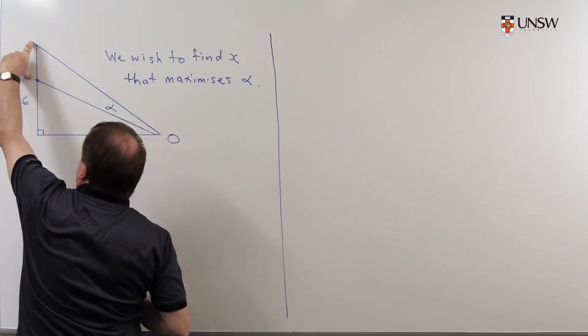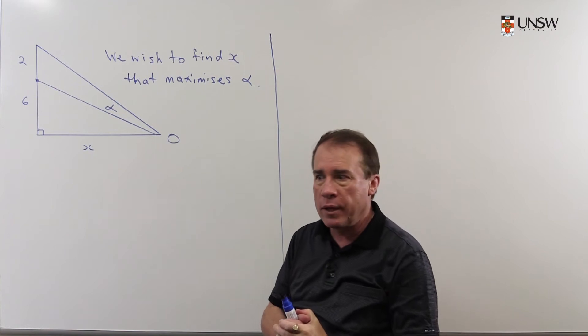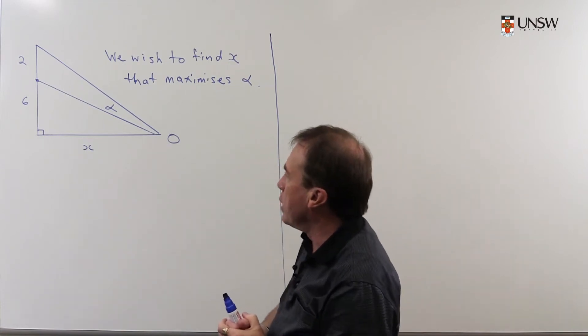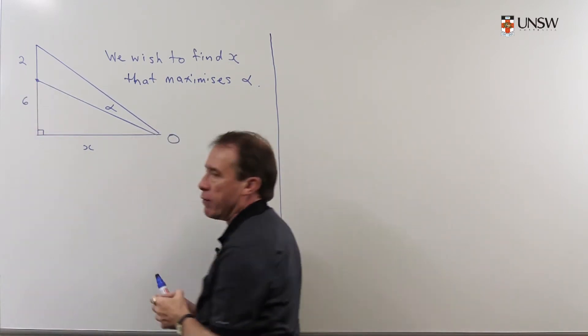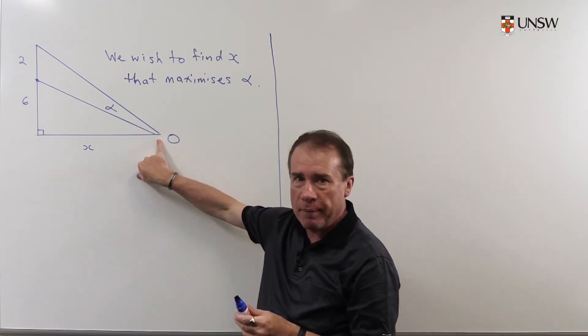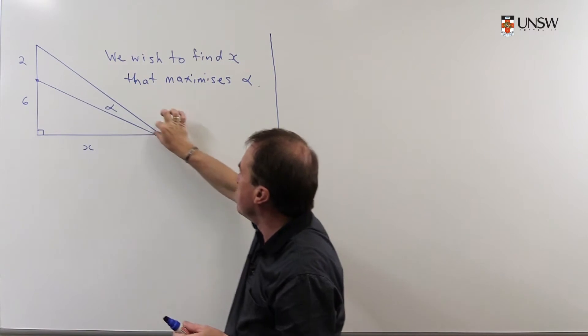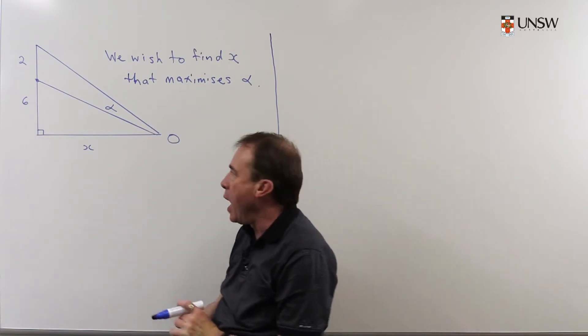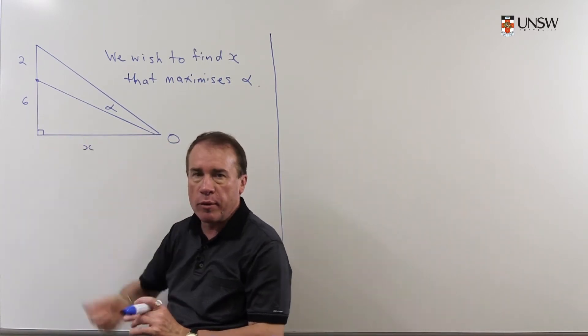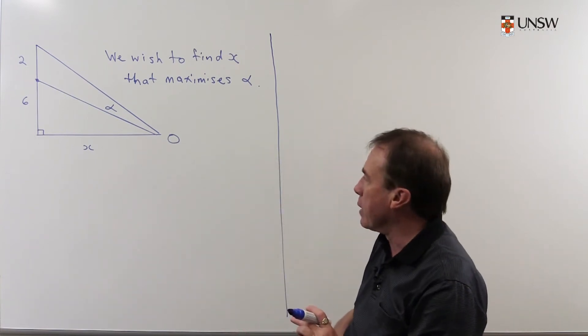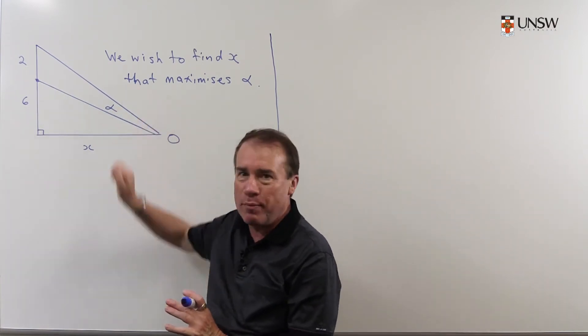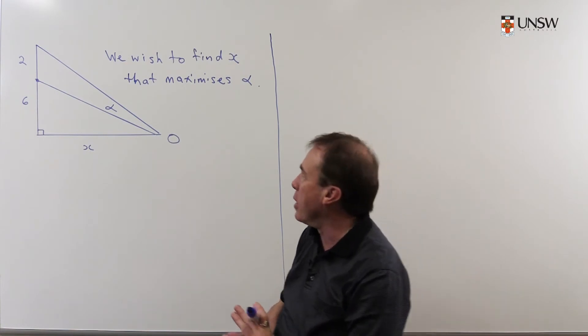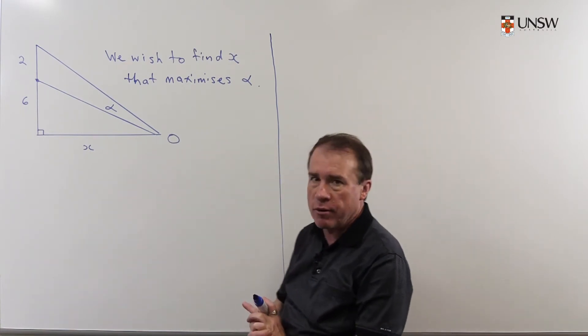The problem is this: we have a picture which is two meters sitting up on a wall. In Regiomontanus's version it was a statue that was lifted up. So you have a picture up here and it's six meters above the ground level, and the observer stands here and the picture is going to subtend some kind of angle alpha with the observer's eye. The question is then how far do you stand away from the base? In other words, I want to choose an X that makes the angle as big as possible so that you get the best possible view of the picture. We're trying to find an X that maximizes the value of alpha.